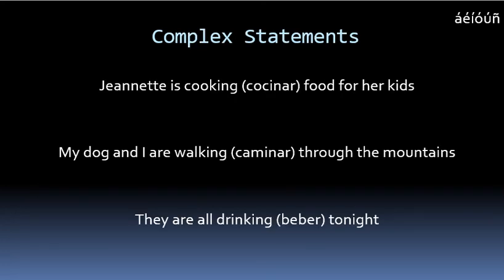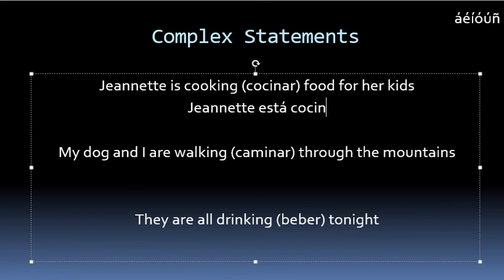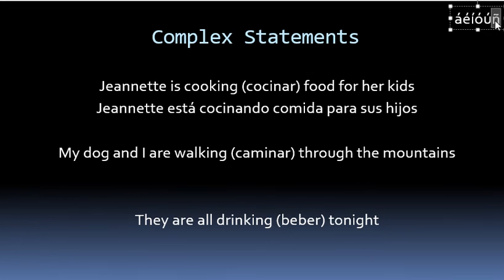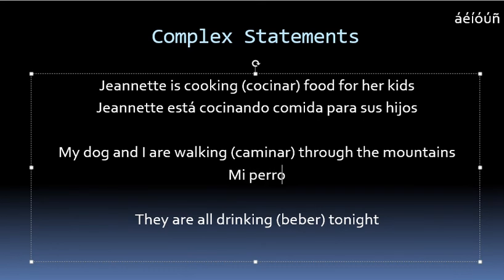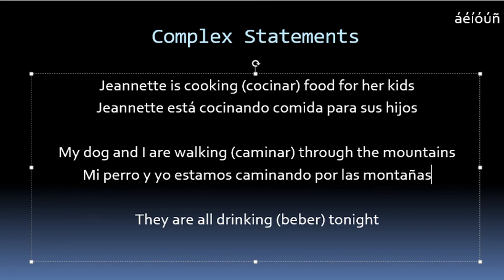To practice with more complex statements that do not involve irregularities, consider the following examples. 'Jeanette is cooking food for her kids' could be translated as Jeanette está cocinando comida para sus hijos. And 'my dog and I are walking through the mountains' could be mi perro y yo estamos caminando por las montañas.